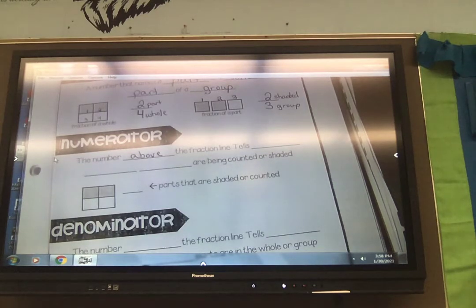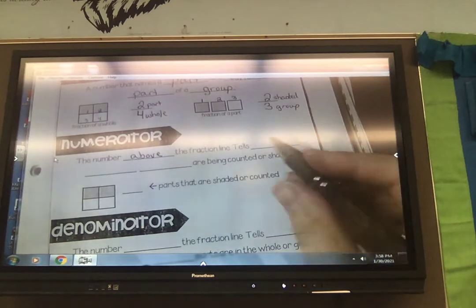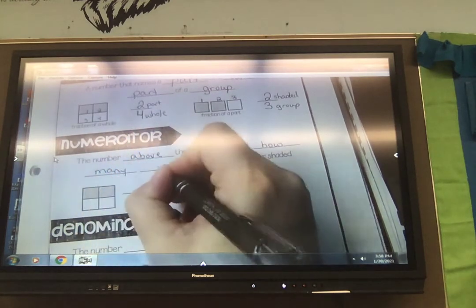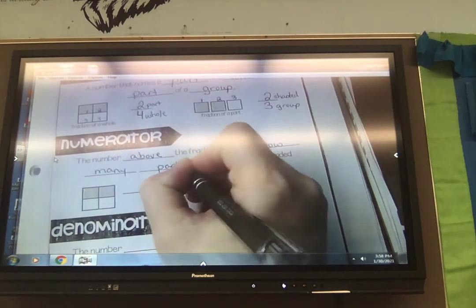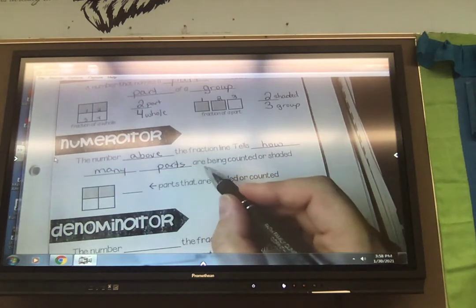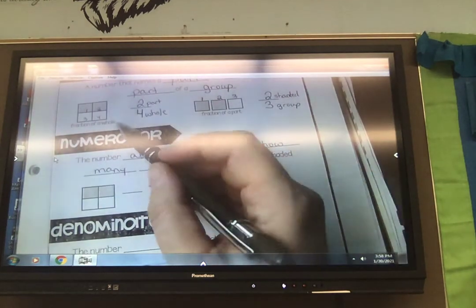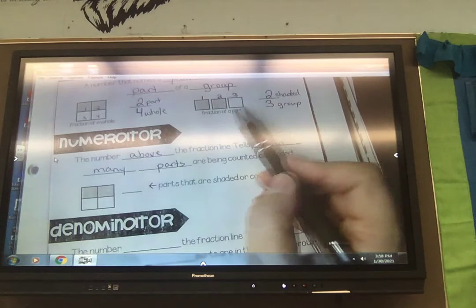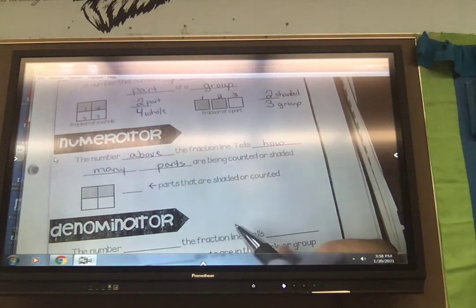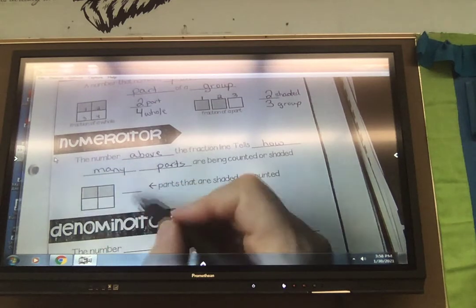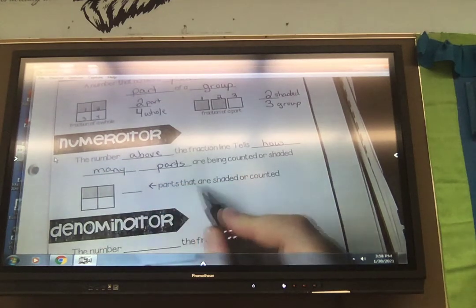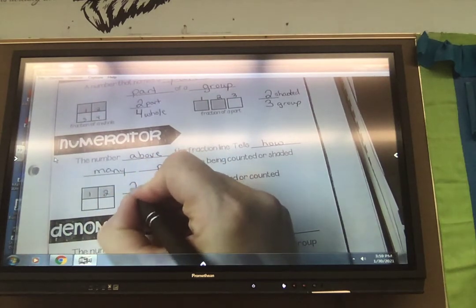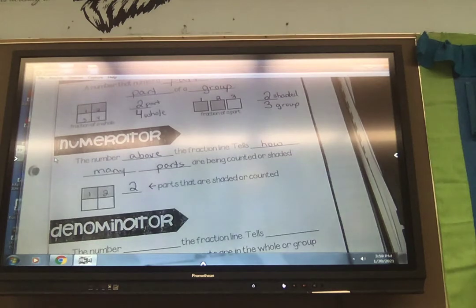It tells how many parts are being counted or shaded. Just like here, two parts were shaded. Over here, two parts were shaded or two groups were shaded. So looking at this fraction again, the parts that are shaded or counted is our numerator. So our numerator here is two because two parts are shaded.